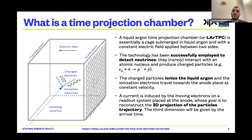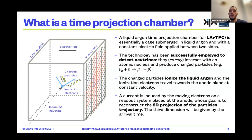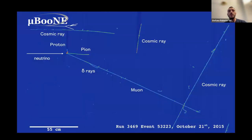Reconstruction has been done by placing wire planes at the anode to reconstruct the 2D projection of the particle's trajectory. The third dimension is given by the arrival time. Here is an example of a neutrino interaction in a single wire plane in the MicroBooNE detector, which was a liquid argon experiment running at Fermilab. You can see the exquisite detail from this detector — the neutrino comes from the left, and you see all the products of the interaction: the proton, the pion, delta rays, the muon, and cosmic rays, since this detector was placed on the surface.